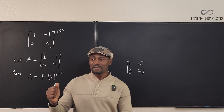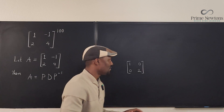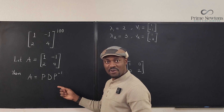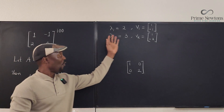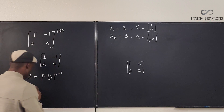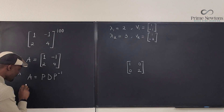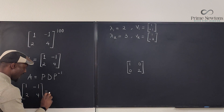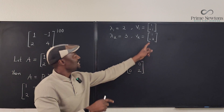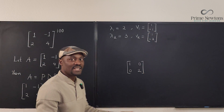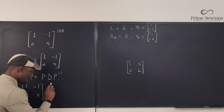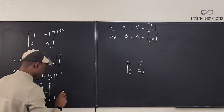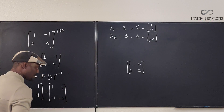From the previous video, I got the eigenvalues and eigenvectors. My matrix A = [1, -1; 2, 4] can be written as P D P⁻¹, where P is formed by placing the eigenvectors side by side. So P = [1, 1; -1, -2].